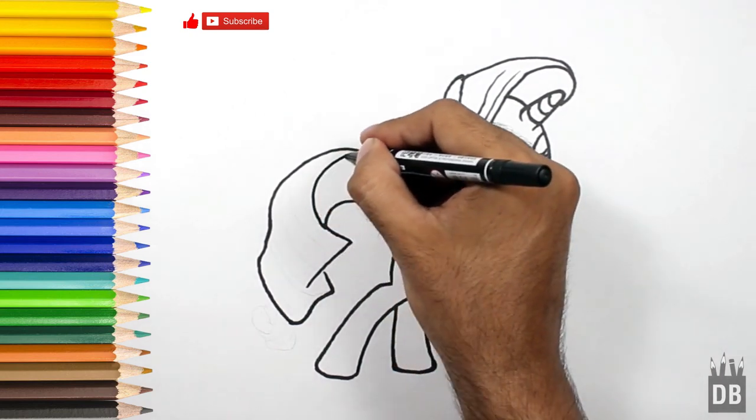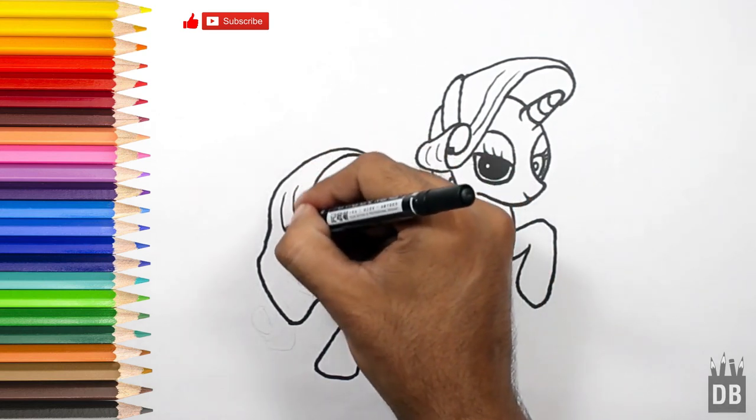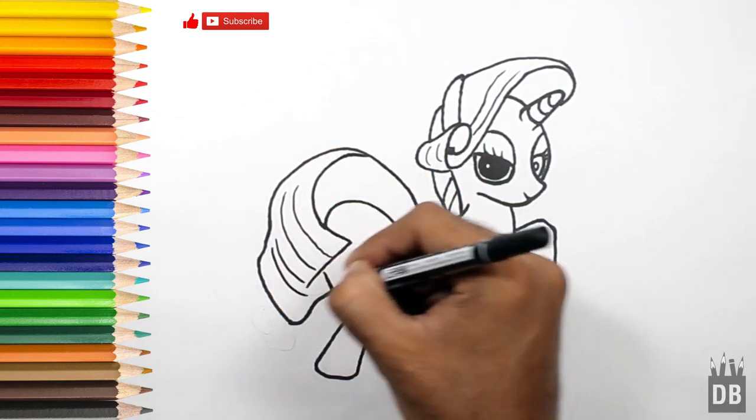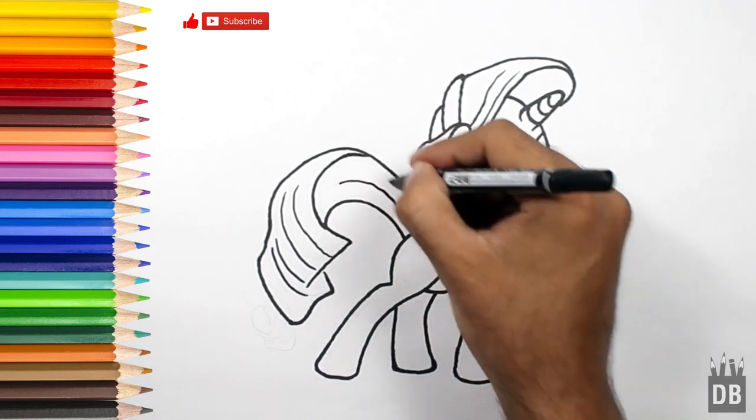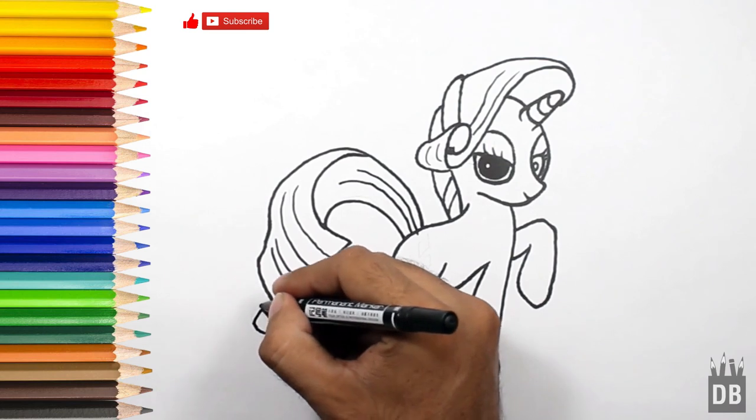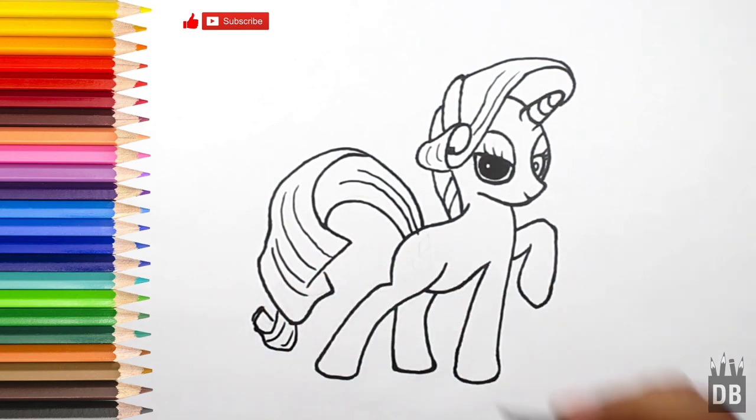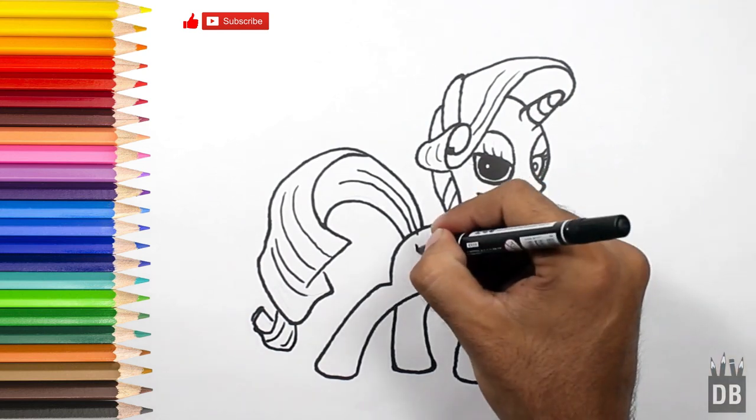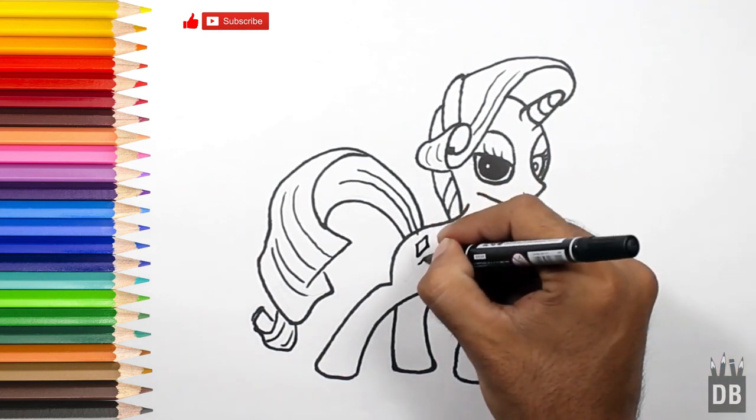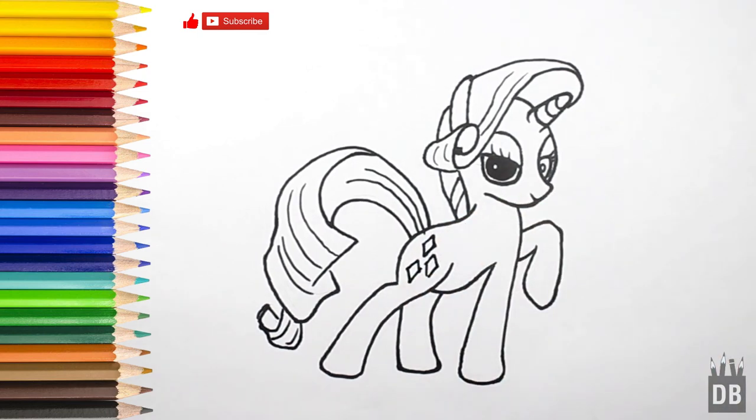From here we will connect to this and this. There will come the lines to show the flow. And here come the diamonds, and our character is ready.